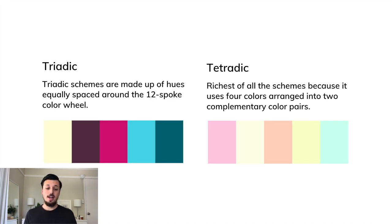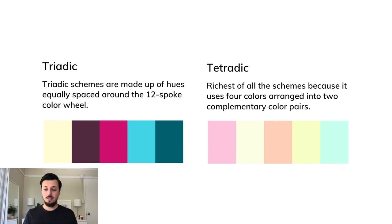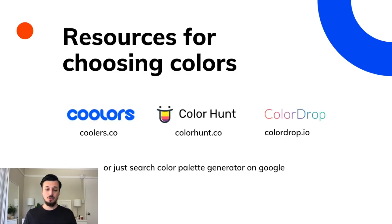Triadic schemes are made up of hues equally spaced around the 12-spoke color wheel — for example, a blue, a pink, and a yellow. Tetradic is the richest of all schemes because it uses four colors arranged in two complementary color pairs. It's the most complex to create, but you can research examples to get started. For resources to build color palettes, Coolers is my favorite, followed by Color Hunt and Color Drop — or just search 'color palette generator' on Google for tons of options.